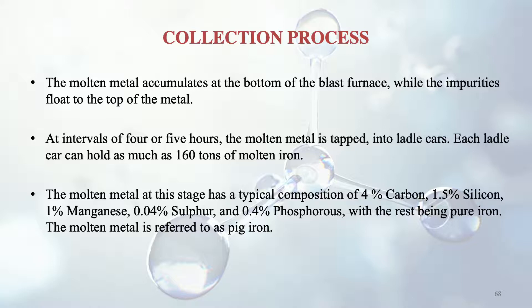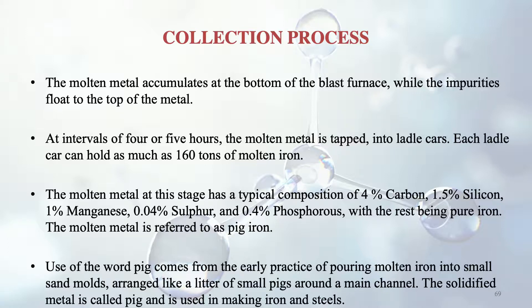The remaining portion — about 94 to 95% — is pure iron. The molten metal collected is referred to as pig iron. The name comes from the early practice of pouring molten iron into small sand moulds arranged like a litter of pigs around a main channel. The solidified metal is called pig iron and is used in making iron and steel.